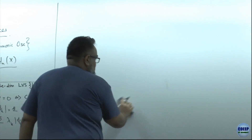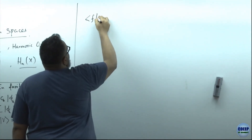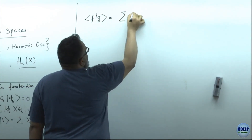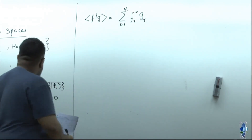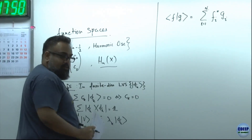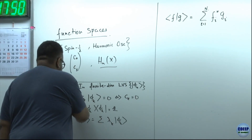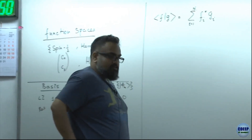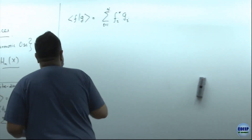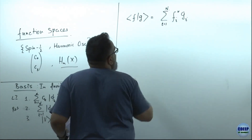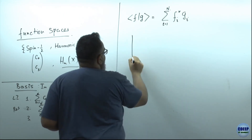In finite dimensions, if you wanted to write something like the inner product <f|g>, you would write sum of f_i* g_i for i going from 1 to n. The summation goes from 1 to n - maybe n is 2 if you have qubits or spin-half problems, maybe it's 200 if you have something complicated.